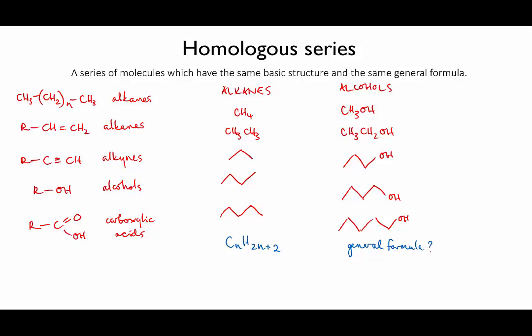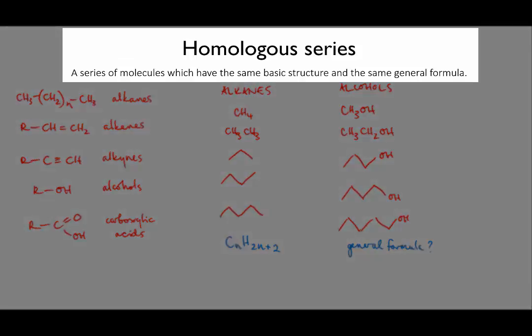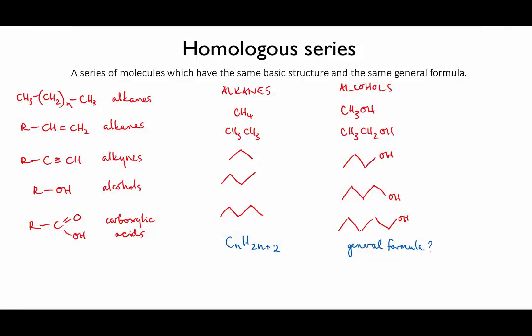Each of these series of molecules is known as a homologous series. So the alkanes are a homologous series. But if you were to mix up the alkanes and the cycloalkanes, for instance, they would not be a homologous series since they have different general formulae and a different basic structure.